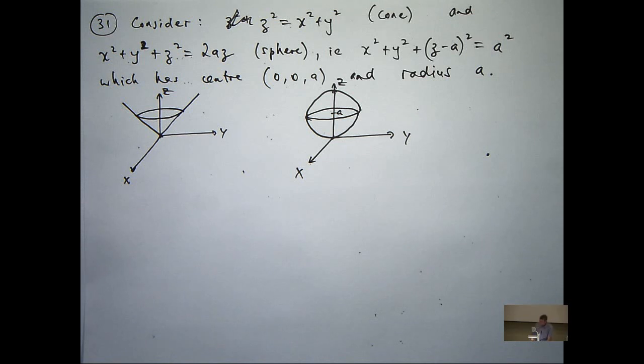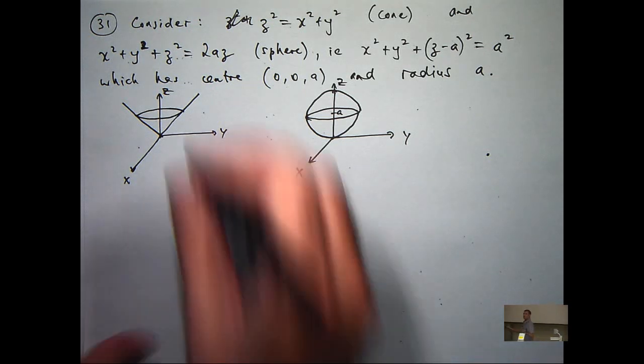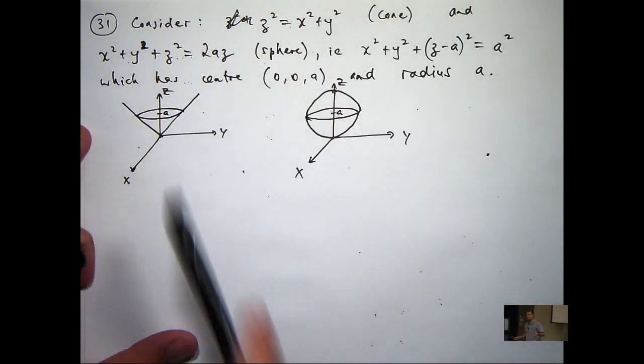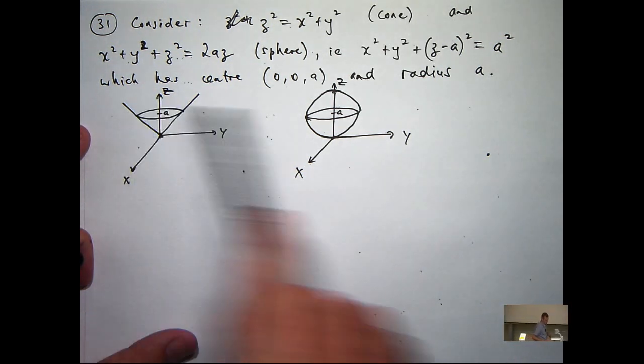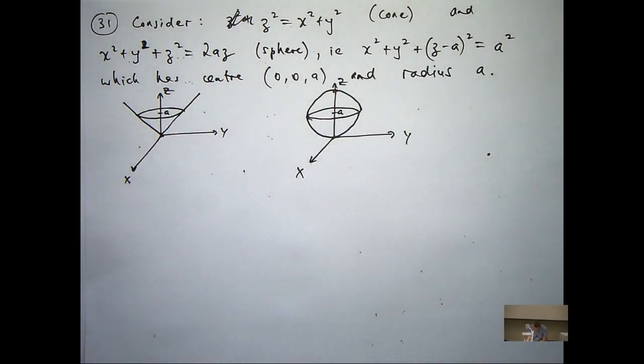Now it turns out that if I label A here, this circle and this circle is the curve of intersection of the two surfaces. So how do I determine that?